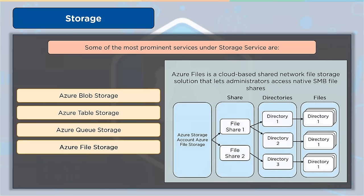Azure Files provides fully managed cloud file shares that can be accessed via the industry-standard Server Message Block (SMB) or Network File System (NFS) protocols. Cloud and on-premises deployments can both mount Azure Files file shares simultaneously. Windows, Linux, and macOS clients can access SMB Azure File Shares, while Linux or macOS clients can also access NFS Azure File Shares using Azure File Synchronization. SMB Azure File Shares can be cached on Windows servers for rapid access near where the data is used.